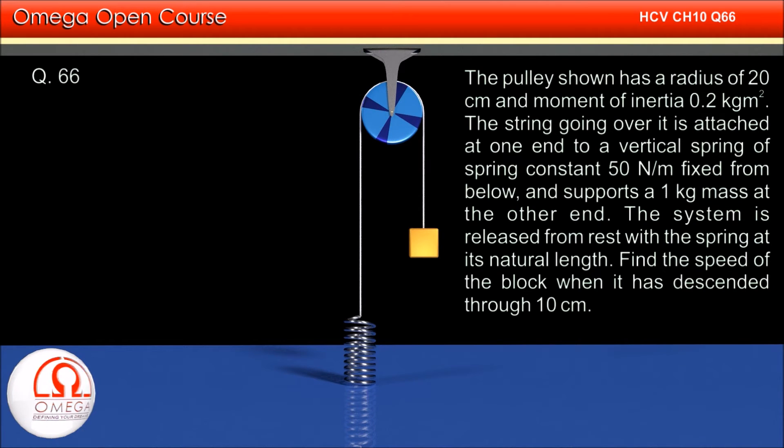The pulley has a radius of 20 cm and moment of inertia 0.2 kg·m². The string going over it is attached at one end to a vertical spring of spring constant 50 N/m fixed from below and supports a 1 kg mass at the other end.